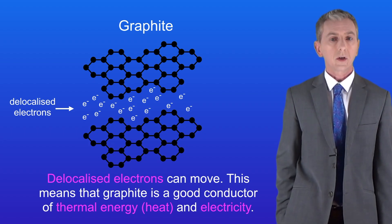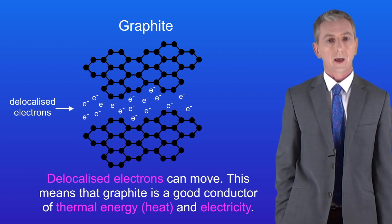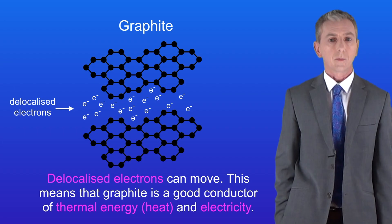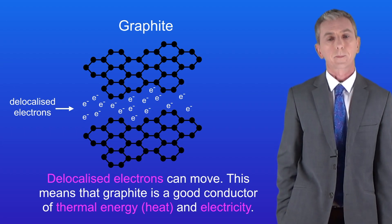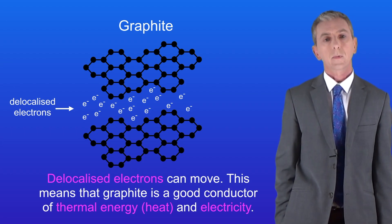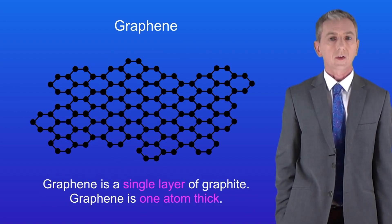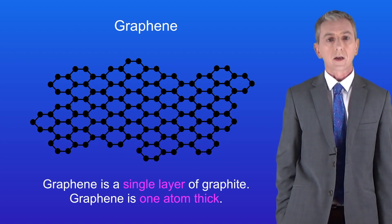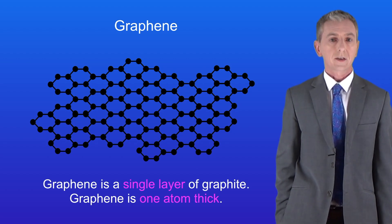In this video we're looking at graphene and at fullerenes. These are all based on carbon atoms, so let's start by looking at graphene. Graphene is a single layer of graphite, which means that graphene is only one atom thick.